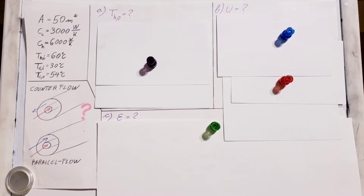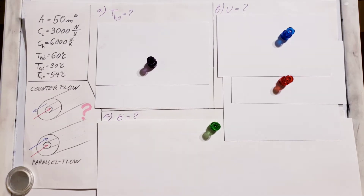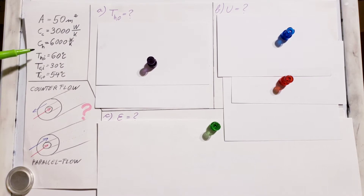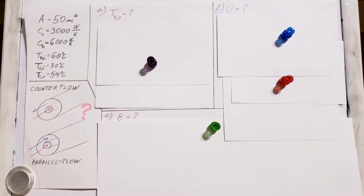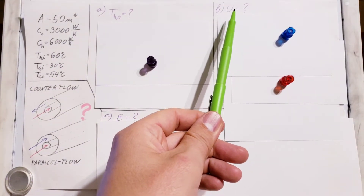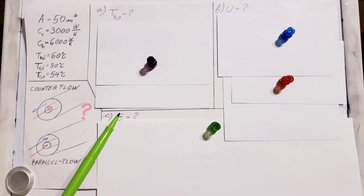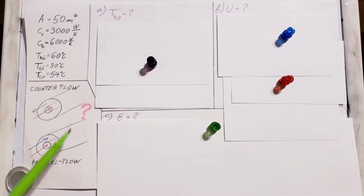This is a heat transfer and thermal system design problem. We are asked to consider a concentric tube heat exchanger with an area of 50 square meters. The heat capacity rate is given for both cold and hot fluid. We have the inlet temperature of both the hot and cold fluid, but we only have the outlet temperature of the cold fluid. Our questions are to find the outlet temperature of the hot fluid, the overall heat transfer coefficient, the effectiveness, and whether this is a counter flow or parallel flow setup.